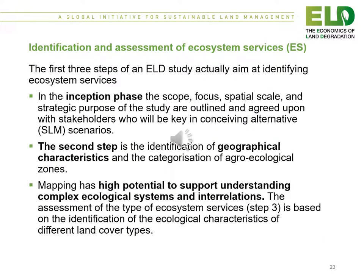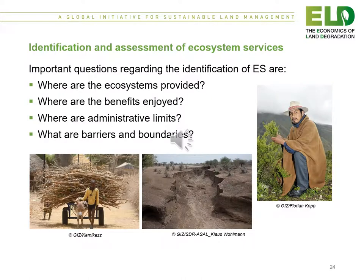The first three steps of an ELD study aim to identify the ecosystem services. In the inception phase, the scope, focus, spatial scale and strategic purpose of the study are outlined and agreed upon with stakeholders, who will be key in conceiving alternative sustainable land management scenarios. The second step is the identification of geographical characteristics and the categorisation of agroecological zones. The important questions regarding the identification of ecosystem services are: Where are the ecosystems provided? Where are the benefits enjoyed? Where are the administrative limits? And where are the barriers and boundaries?